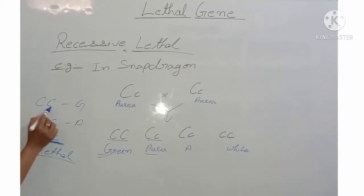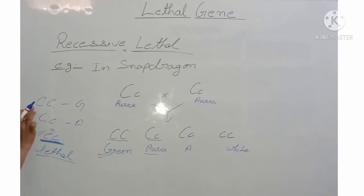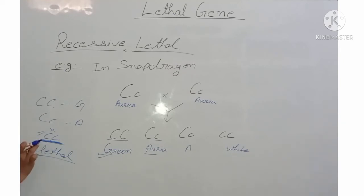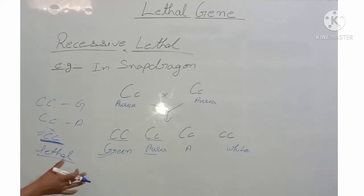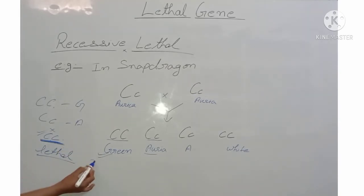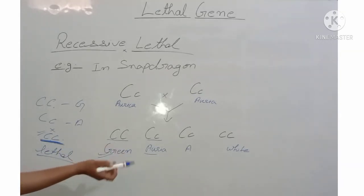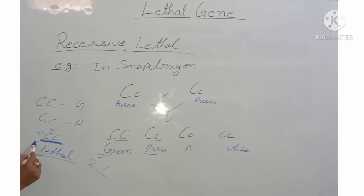When the dominant gene was in homozygous condition, lethality was shown and the organism was not produced. Similarly, when the recessive gene is in homozygous condition, lethality is shown and the individual will not be produced. The ratio here is also 2:1, as one class of individual is not produced.